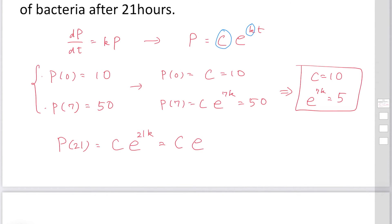So we just rewrite this equation a little bit: C exponential 7k to the power of 3.